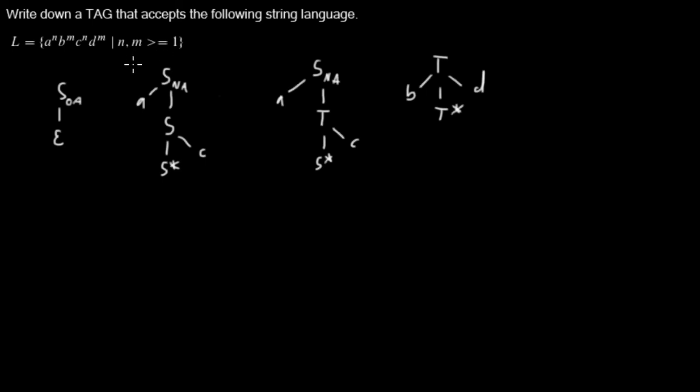And also, that means now I could end after one adjunction of this tree or of this tree into that one. But I don't want that either because then we wouldn't have any B's or D's.